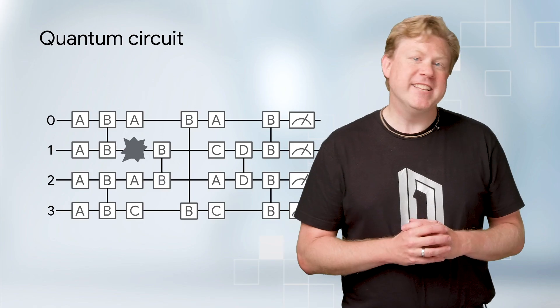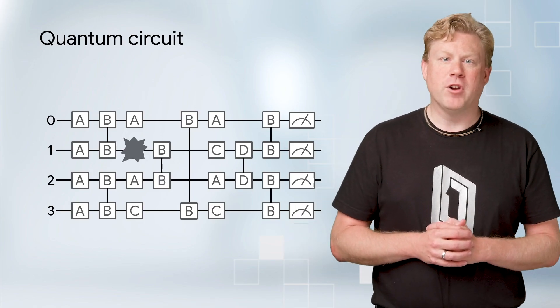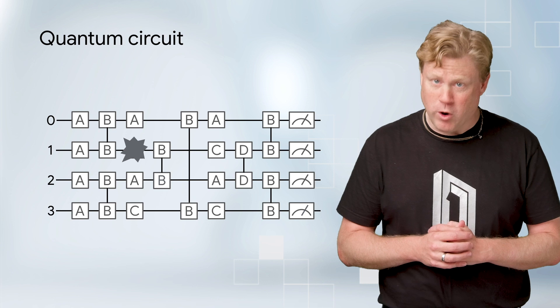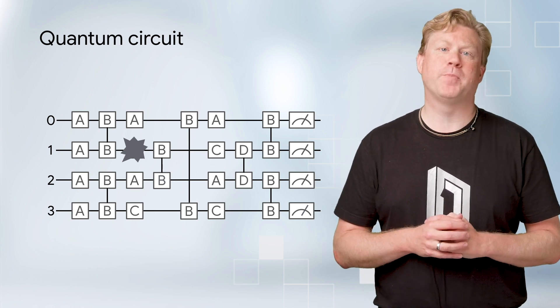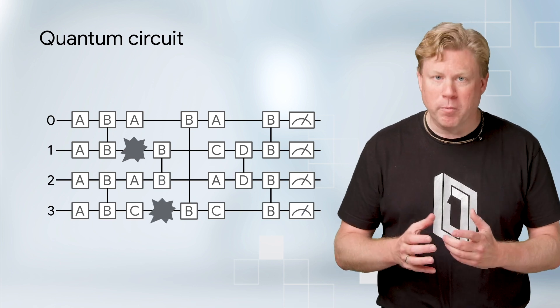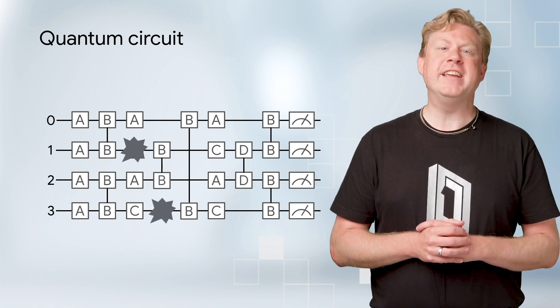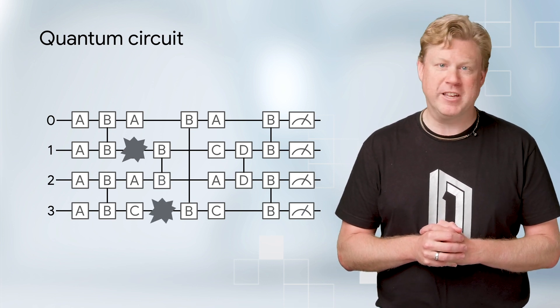In addition to not being able to execute gates exactly, quantum computers also have a problem just doing nothing. That is, if you leave quantum bits around, over time the quantum information stored in them will decay away. We call this process decoherence. Boom! While waiting to execute the next gate, one of our qubits has failed due to decoherence.